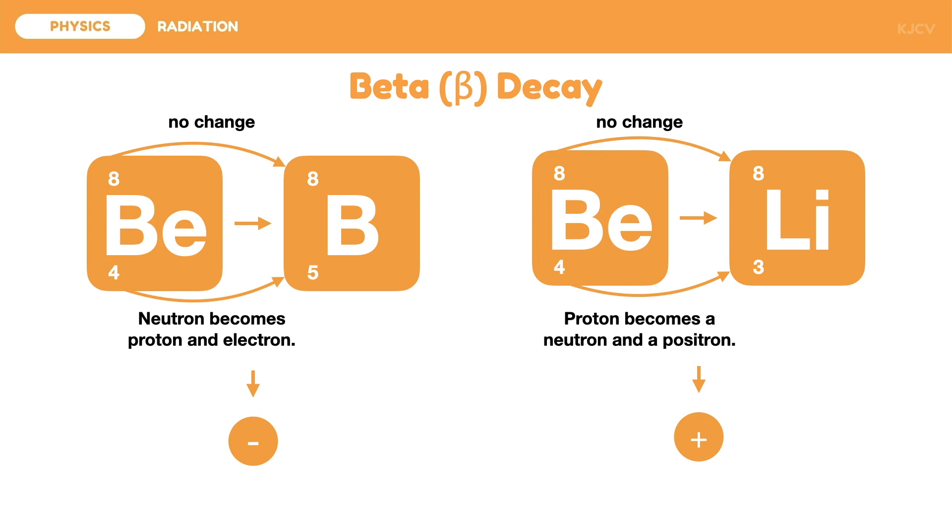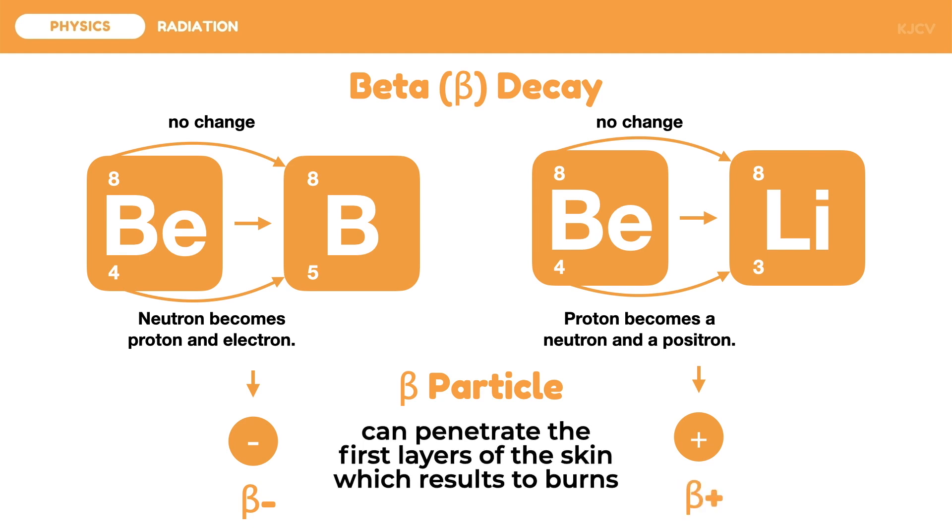It will also change into a positron which has the same mass as the electron. These particles removed from the atom are highly energetic particles which we call beta particles. The electron or the negative particle is the beta negative particle, and the positron or the positive particle is the beta positive particle.